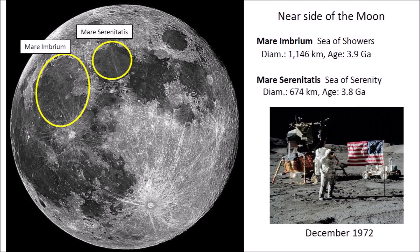Mare Serenitatis, the Sea of Serenity, has a diameter of 674 kilometers and an age of 3,800 million years. Apollo 17 landed near the Sea of Serenity and examined the large mounds of bedrock that were displaced during the catastrophic meteor impact that formed the Serenitatis Basin. Apollo 17 was the last manned mission to the Moon.